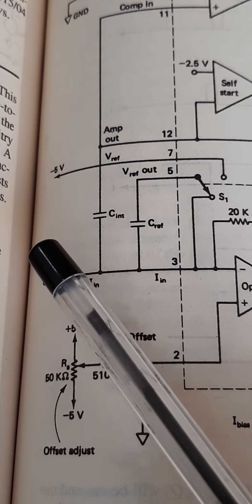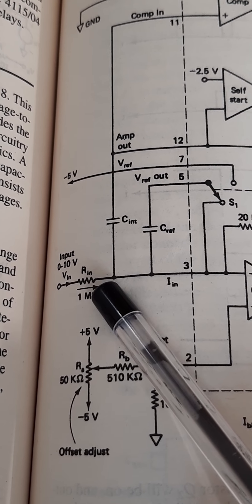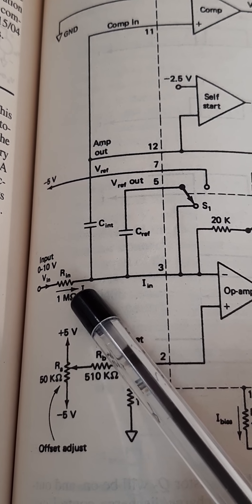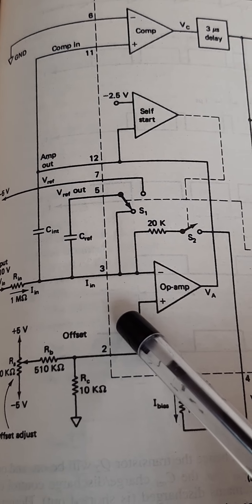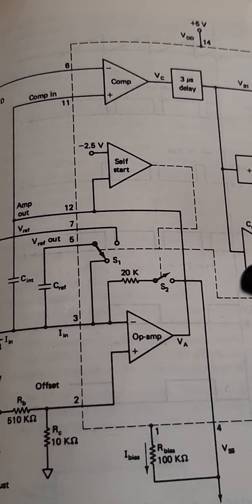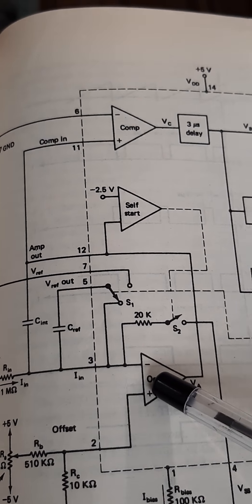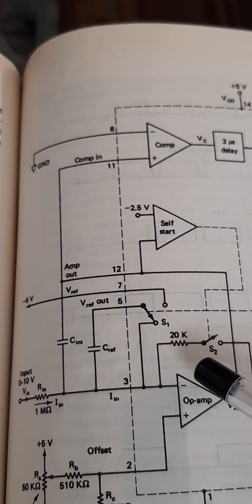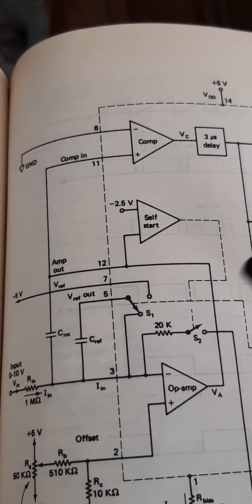Starting from the input: there is a voltage input and a resistor. The corresponding current — voltage divided by resistor — is considered for charging the capacitor. You can see an op-amp here which forms an integrator circuit.